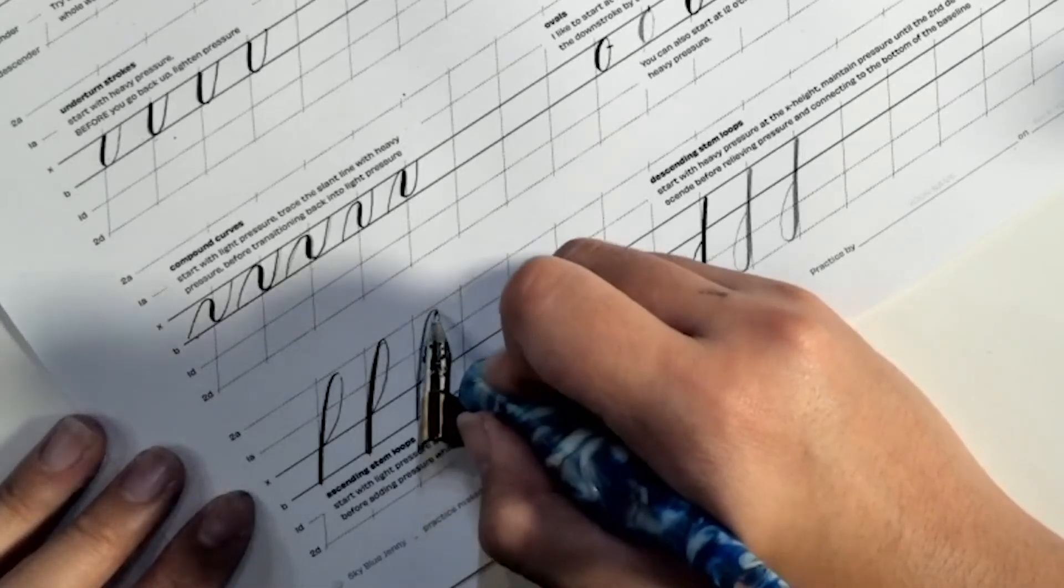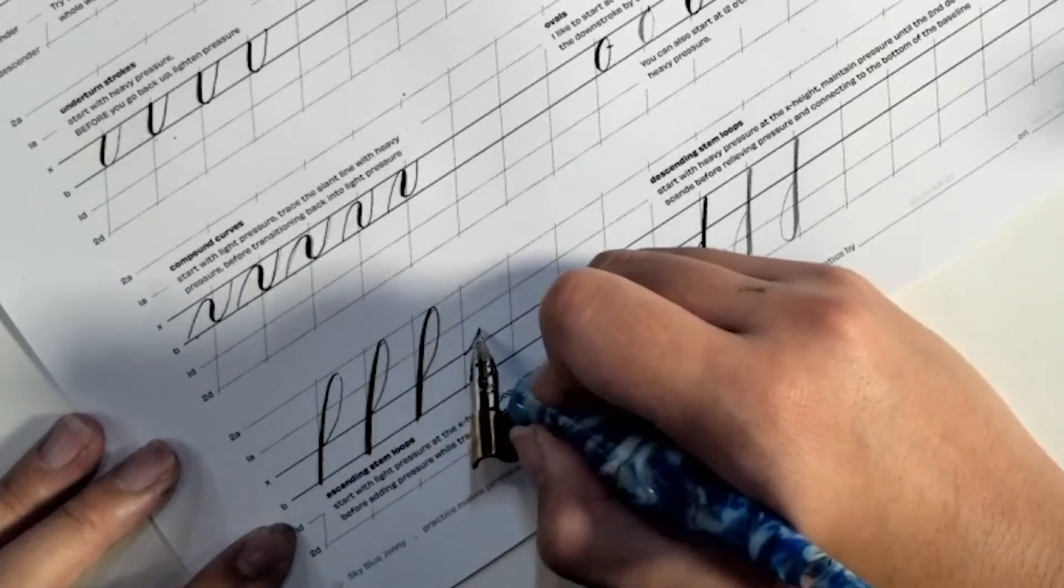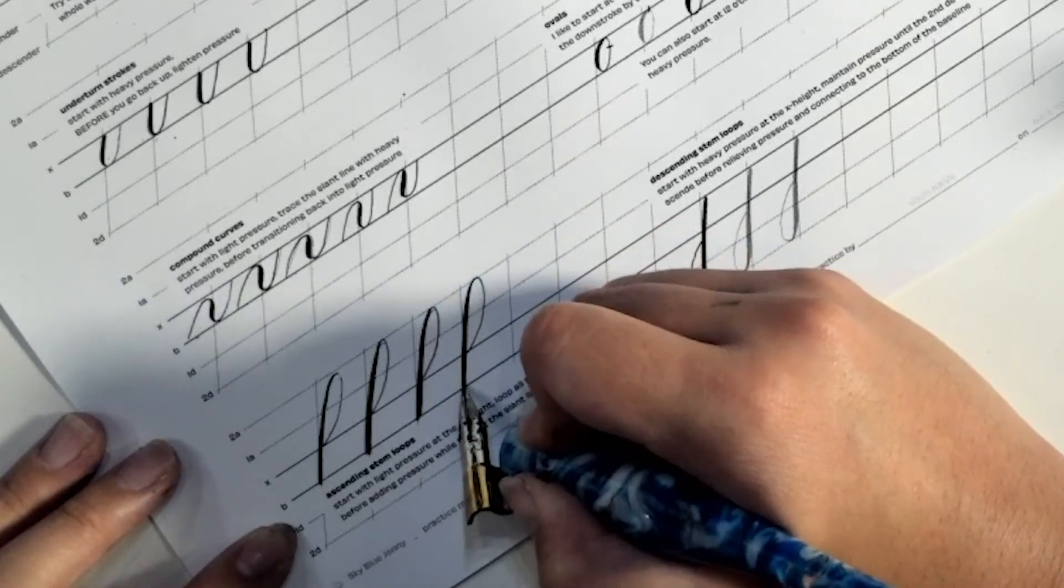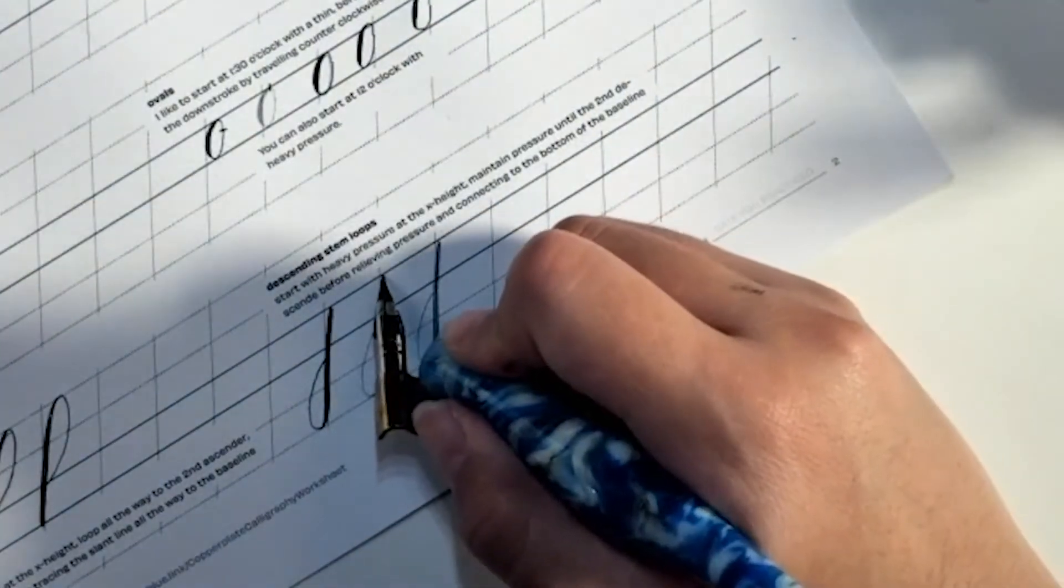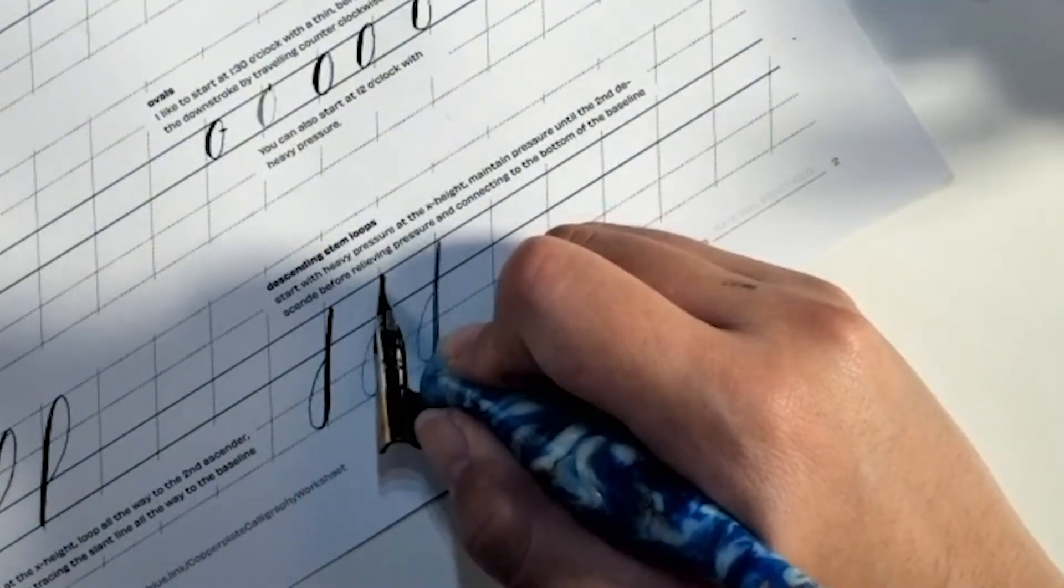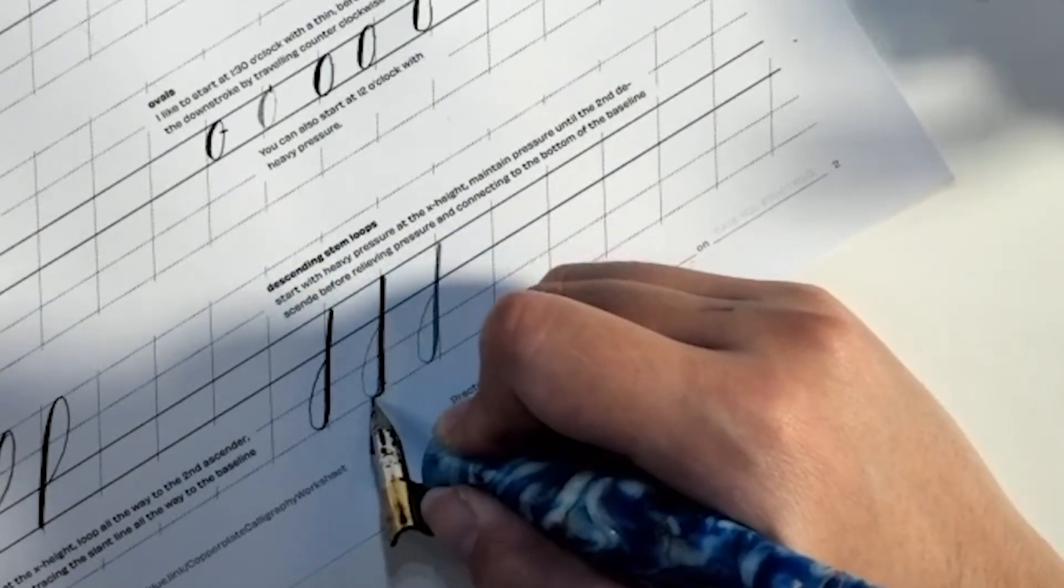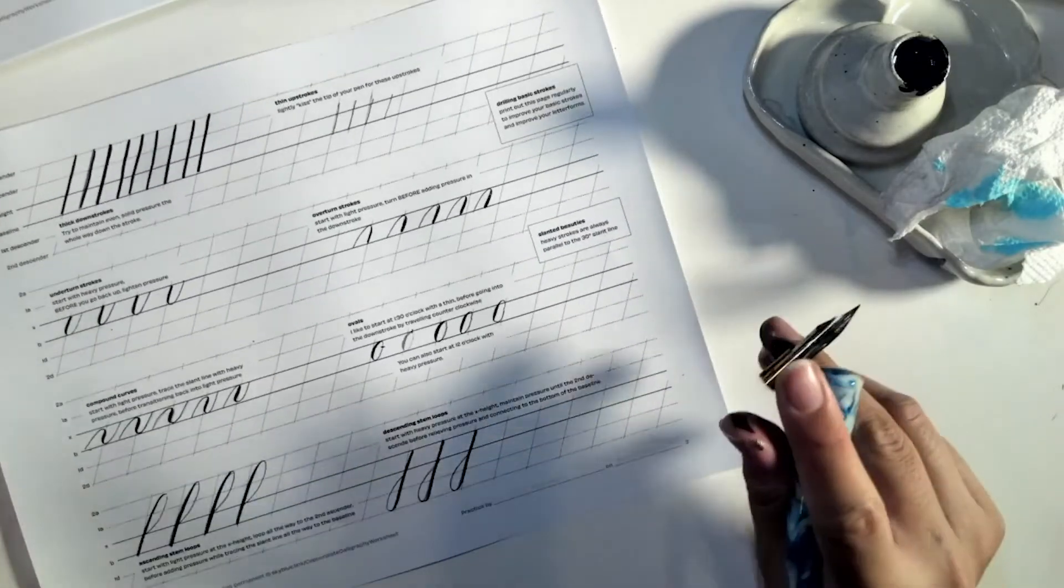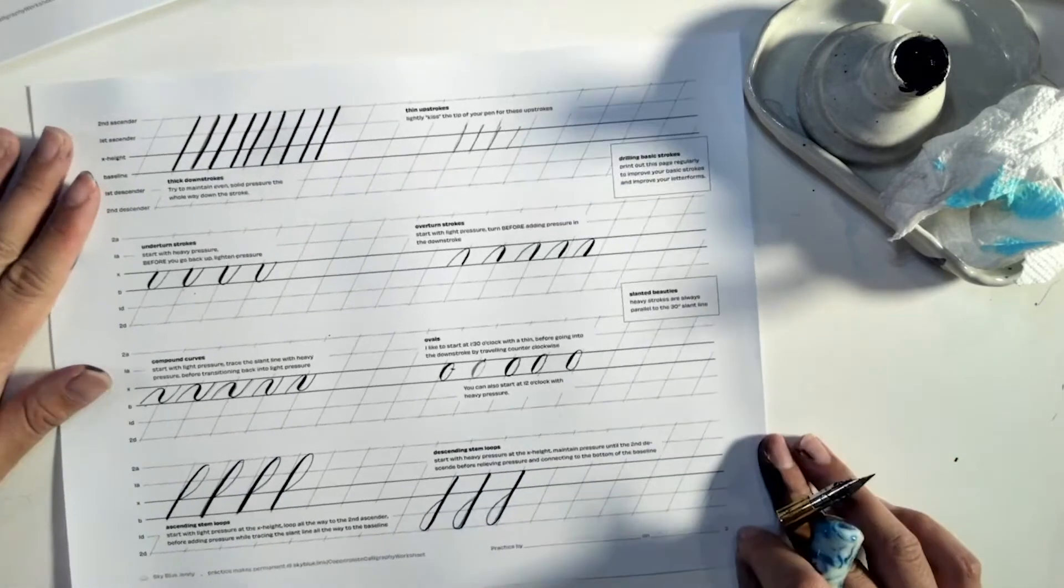Alright. So these are ascending stem loops. And then you go back up and around and then you add pressure. This last one is the descending stem loops. You're going to start with heavy and consistent pressure all the way down until the second descender line. And then you're going to come back around, relieving pressure back until you hit the baseline. So these are all the basic strokes that are in calligraphy.